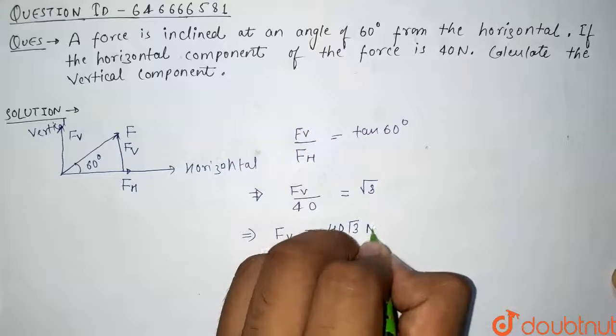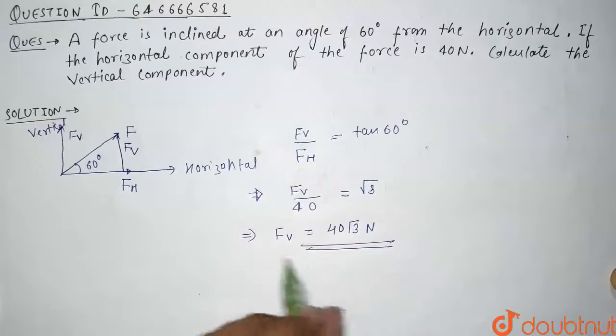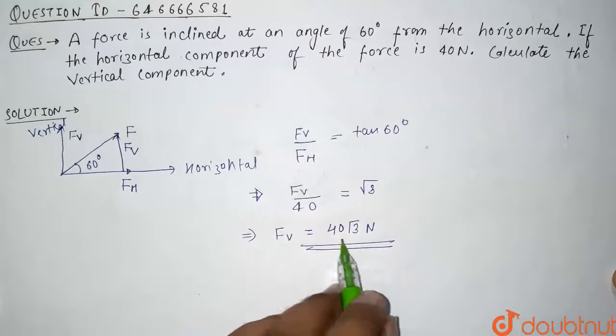So from here, our FV, that is vertical component of force, comes out to be 40 root 3 Newton. So the vertical component comes out to be 40 root 3 Newton. This is our final answer.